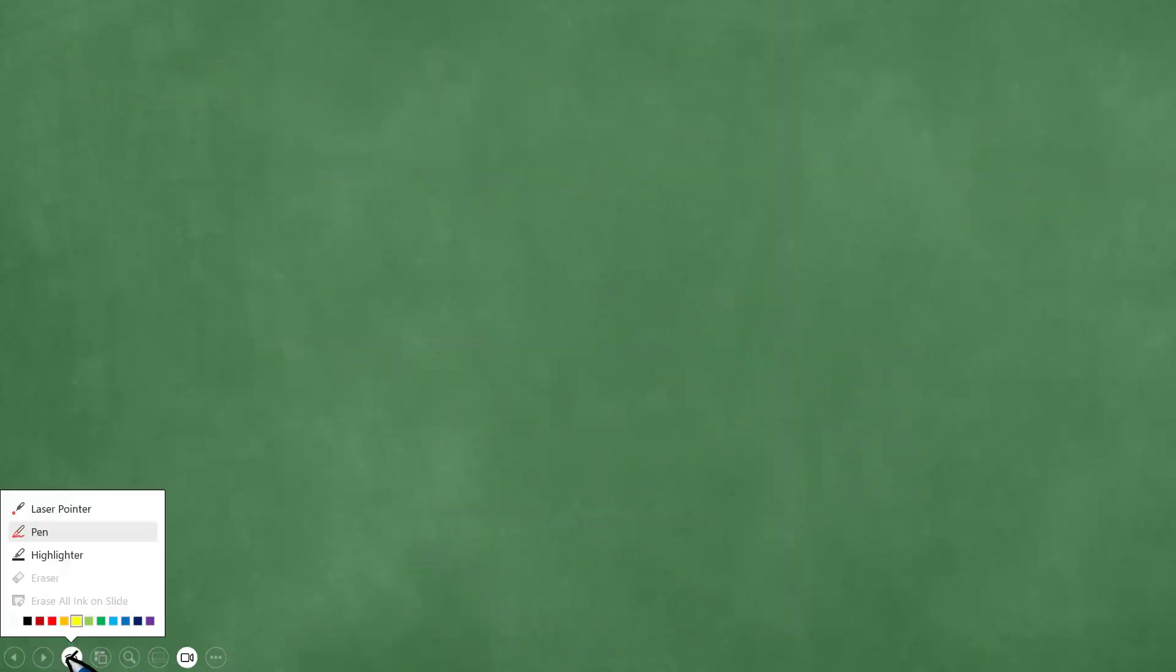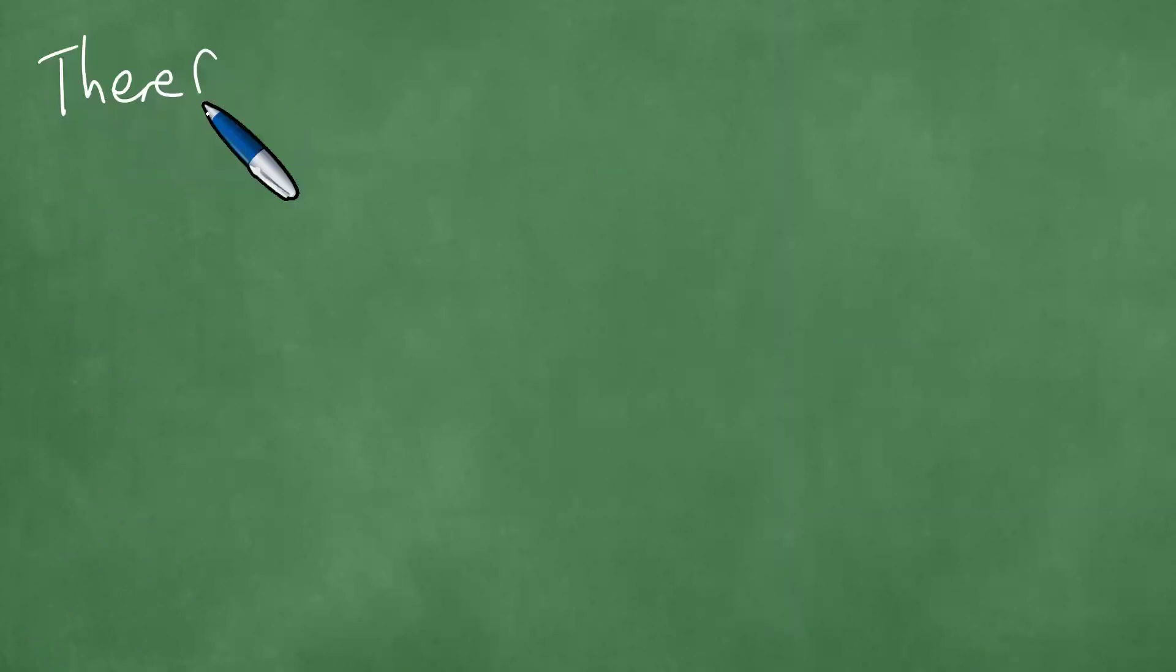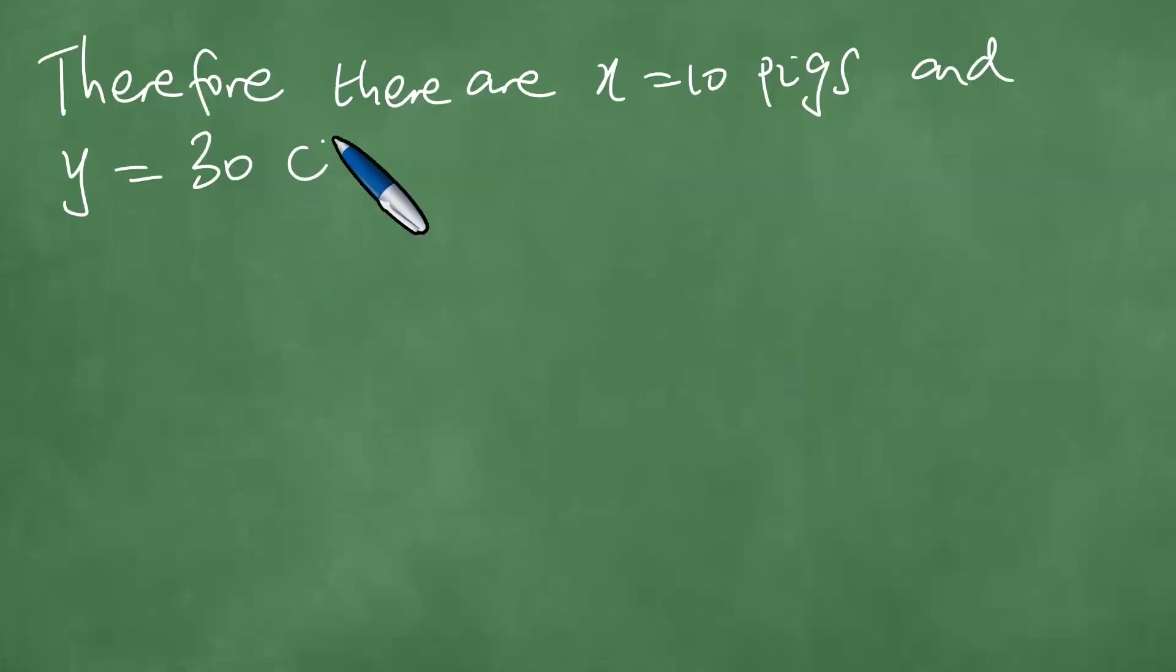And we're able to make the following inference. And we say, therefore, there are X equals 10 pigs and Y equals 30 chickens.